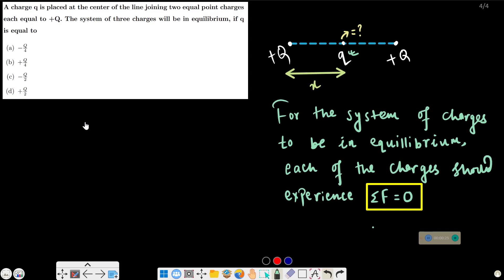Now, force due to Q on q, or force due to Q on q, will be zero. The net force on the charge, plus any other force, should be equal to zero.